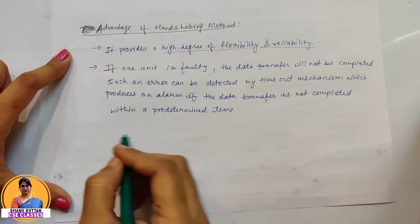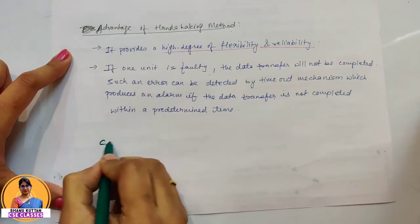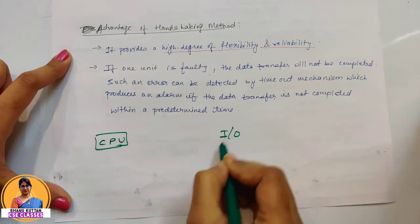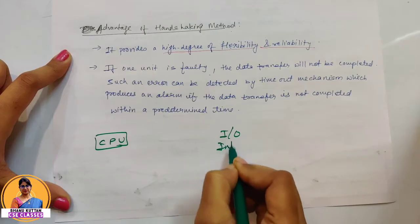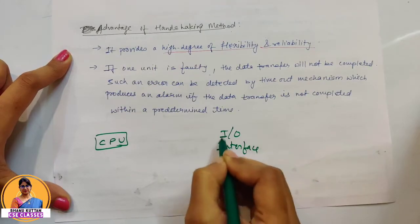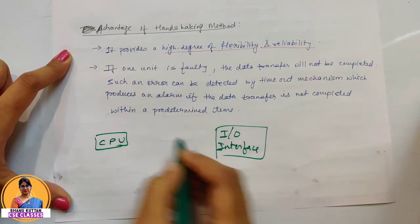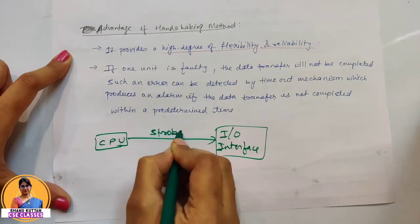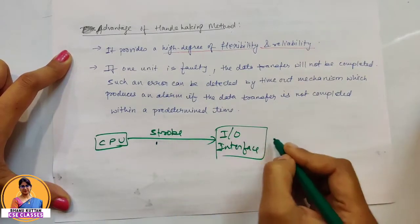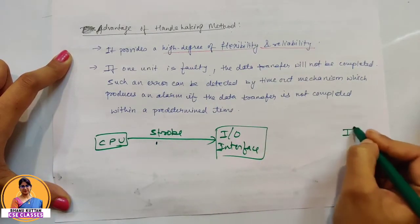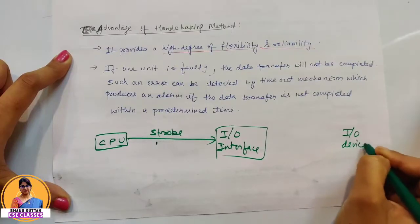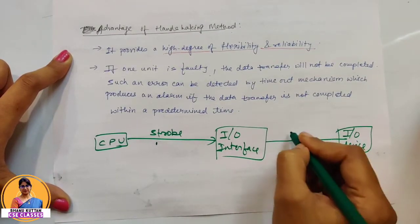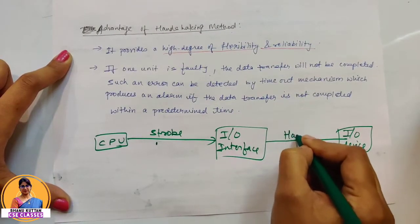In summary, comparing strobe control and handshaking method: when CPU and I/O interface communicate together, they use strobe data transfer. When I/O devices and I/O interfaces communicate together, they use the handshaking method.